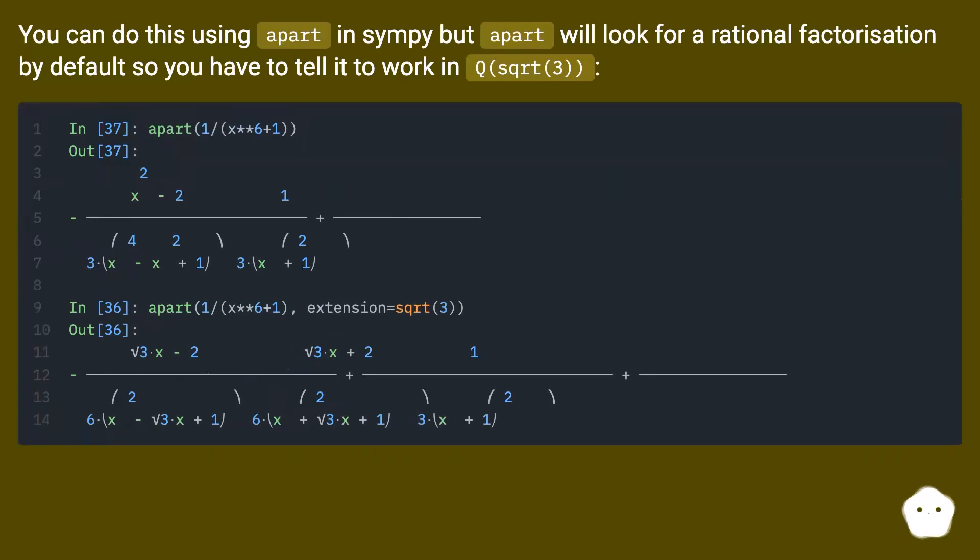You can do this using apart in SymPy, but apart will look for a rational factorization by default, so you have to tell it to work in Q(sqrt(3)).